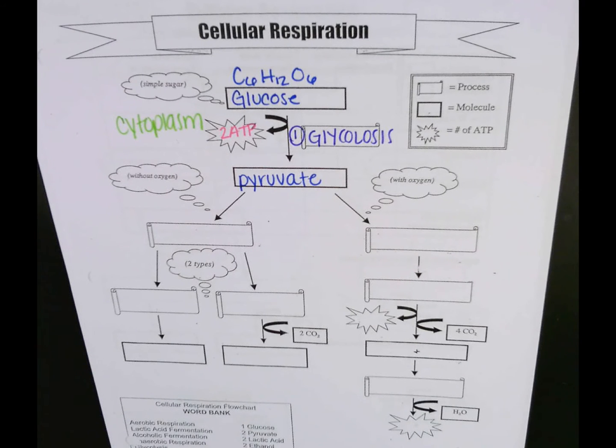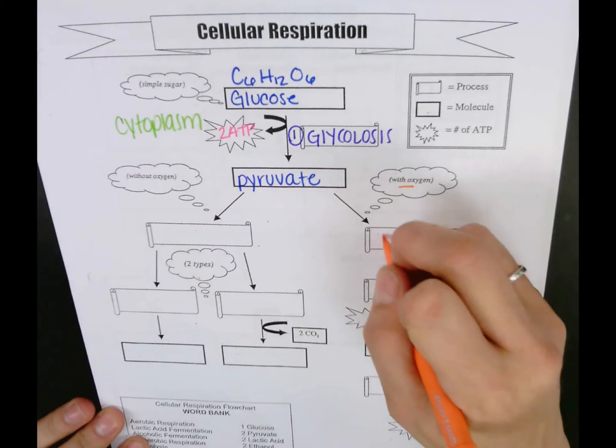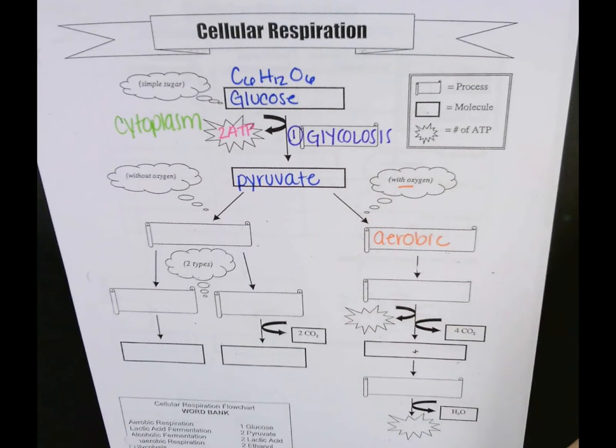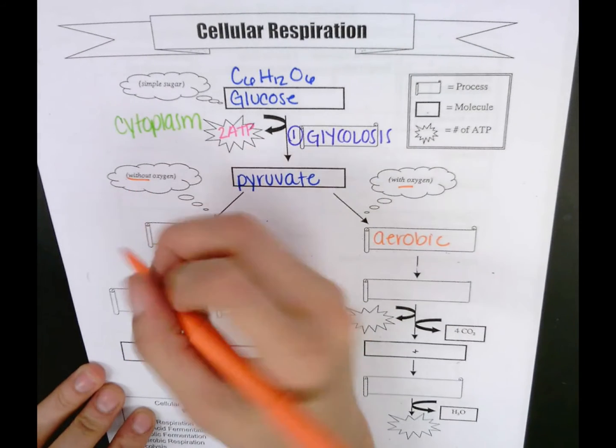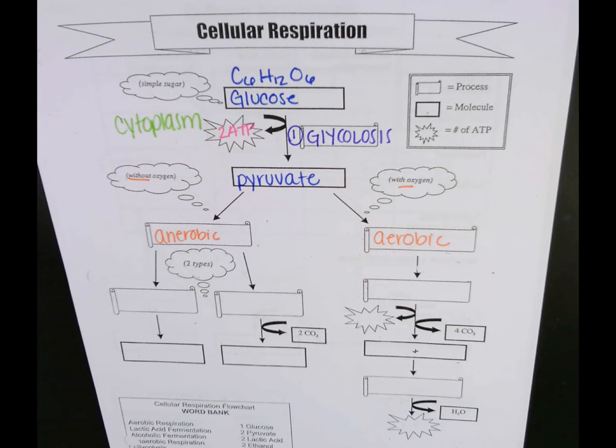Now something important happens after this step. We need to determine if we can take the more efficient route, much like a highway, or if we need to take the back roads because there's an obstacle in our way. That obstacle that can get in our way is actually the presence of oxygen. If we have oxygen, we call that aerobic. Aerobic respiration is how we get more efficiency out of cellular respiration. Now if we do not have oxygen, we call that anaerobic. In anaerobic respiration there is no oxygen present, so we can't go the highway route.